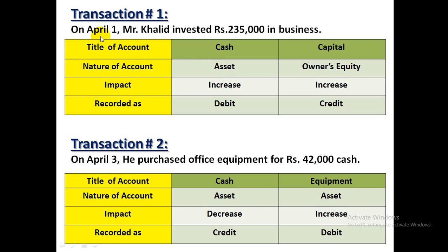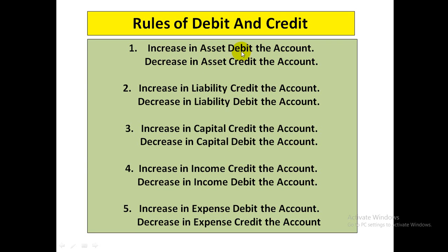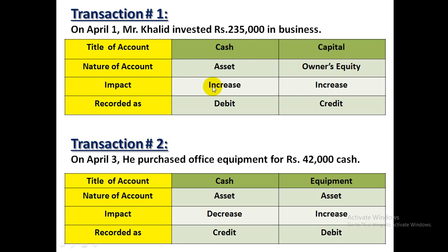First transaction: Mr. Khalid ne Rs. 2,35,000 business me invest ki. Is transaction me do accounts involved hain — ek to cash, jo business me aya, aur doosra capital. Title of accounts identify karna hai. Cash by nature asset hota hai. Cash business me aya to cash increase ho raha hai. According to rules of debit and credit, agar asset increase ho to wo debit side pe record hoga — isliye cash ko debit column me record karenge.